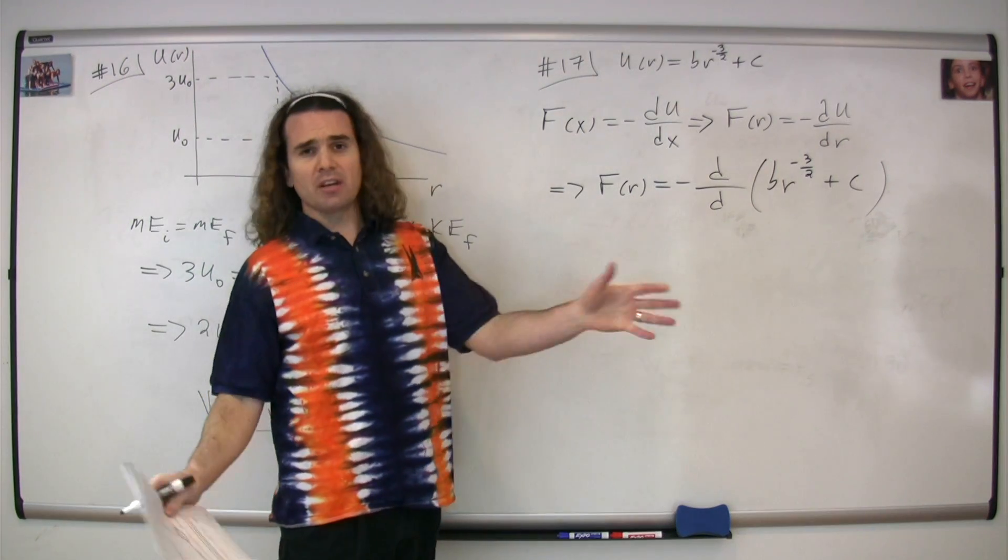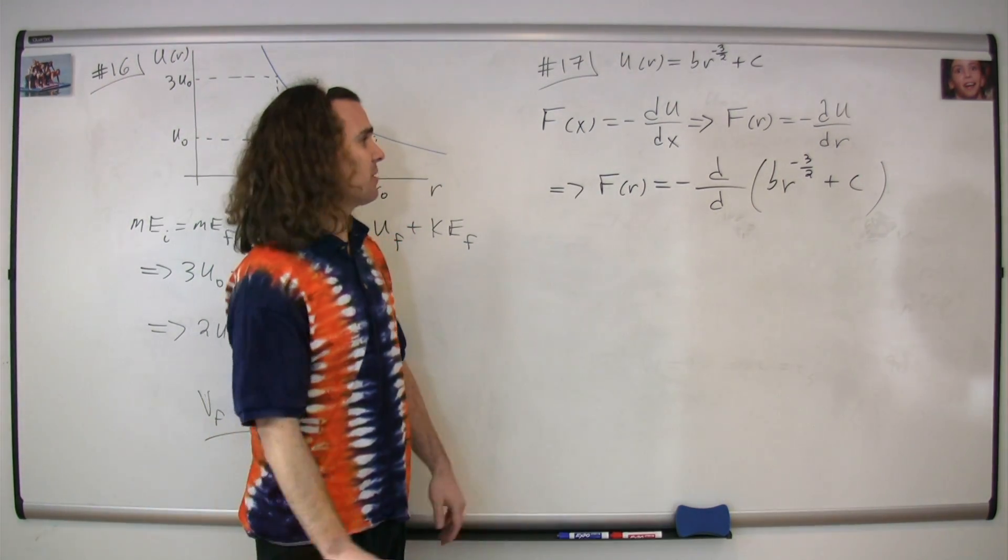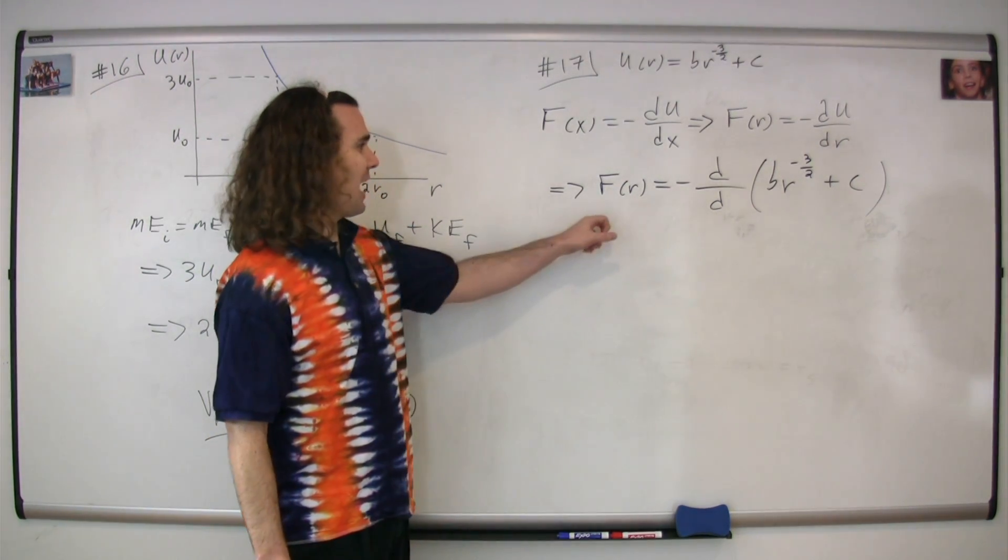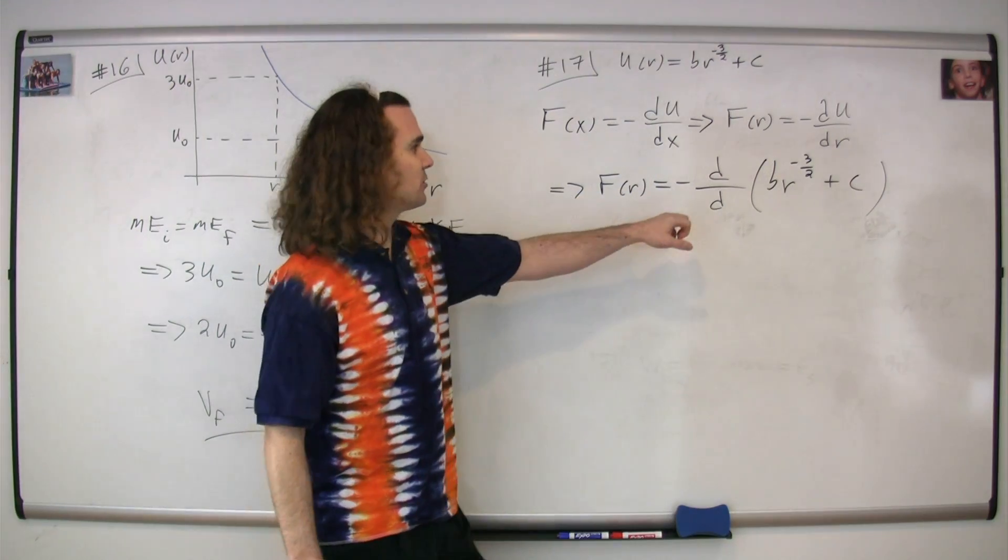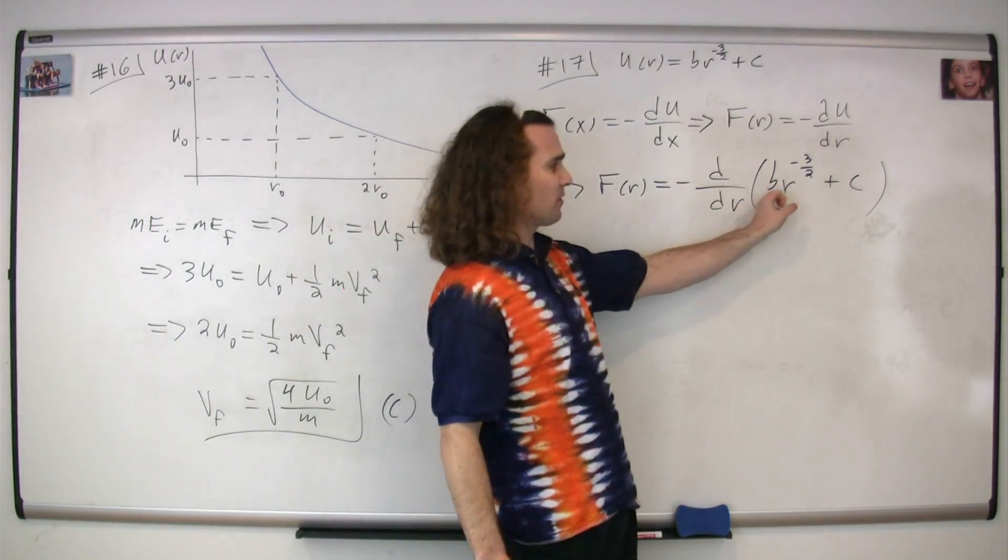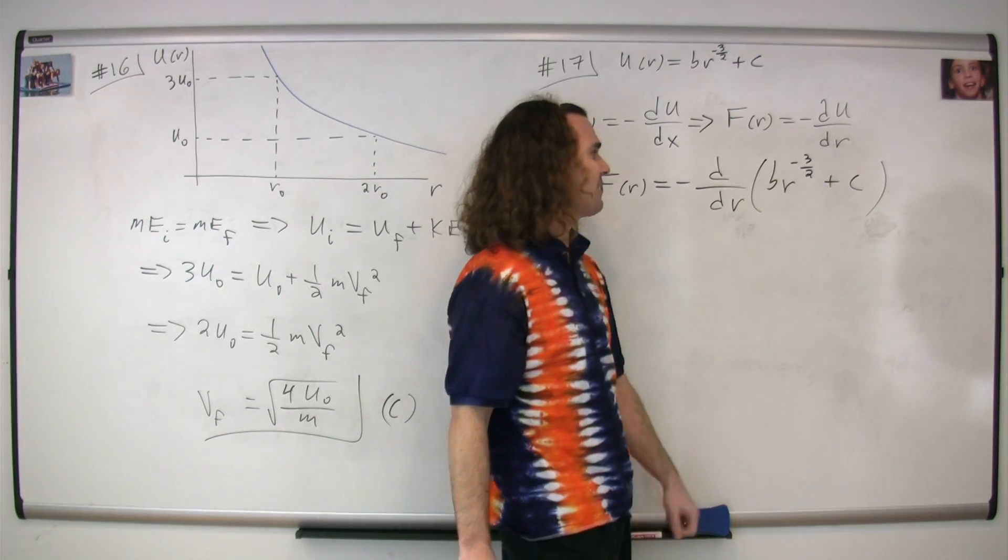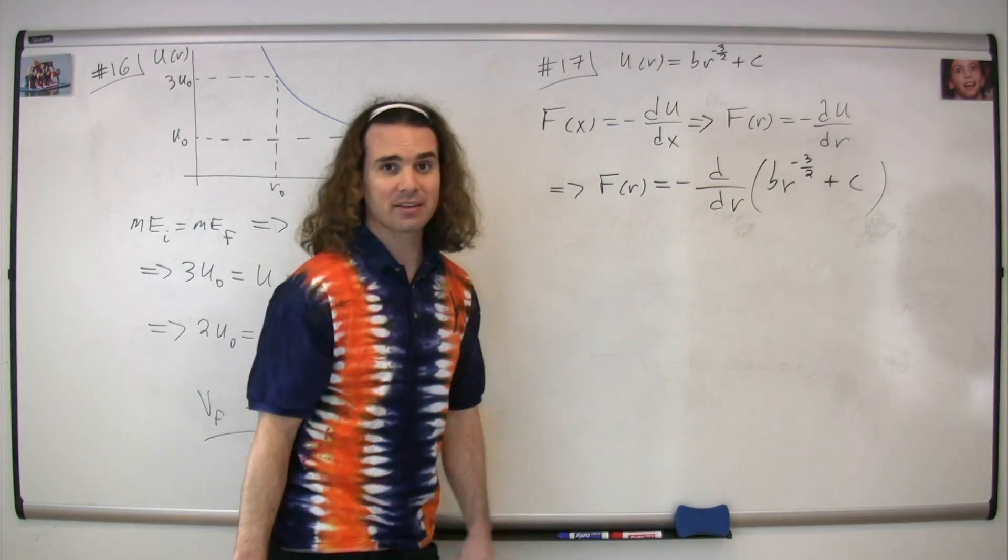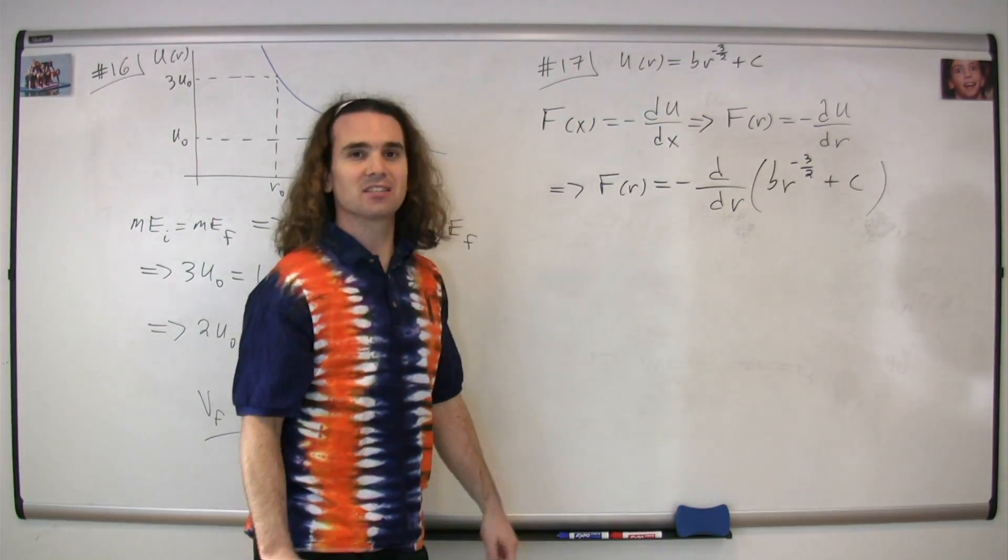So we can substitute in r instead of x, it's just a random position variable. So we have that the force is equal to the derivative of our equation Br to the negative 3½ power plus c with respect to the position, which in this case is r.